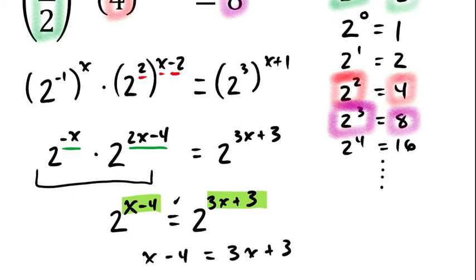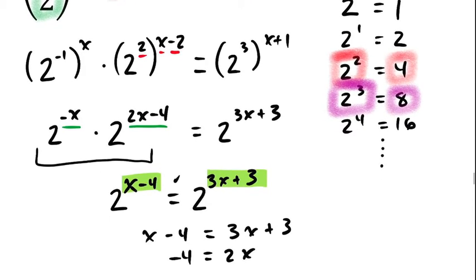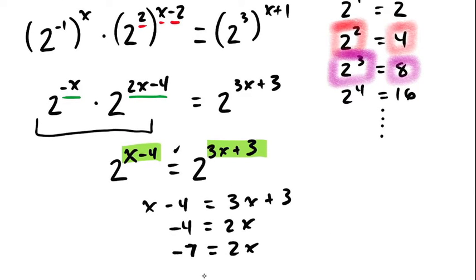Therefore, if I take away x from both sides, negative four has to be the same thing as two x. And if I take away three from both sides, negative seven has to be the same thing as two x. And if I divide by two, negative seven halves is x or x is negative three point five. So, x is negative three halves.